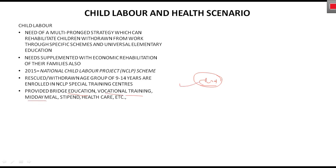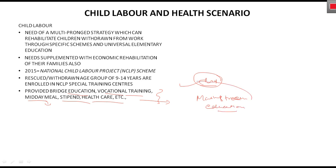इन special training centers में बच्चों को bridge education provide की जाती है — क्योंकि जो बच्चा child labor कर रहा था उसका education बहुत poor होगा, तो उसको bridging की जरूरत है। इसके साथ vocational training, midday meal, stipend, और healthcare भी दिया जाता है — जब तक कि वो mainstream education join करने के लिए ready न हो जाए।